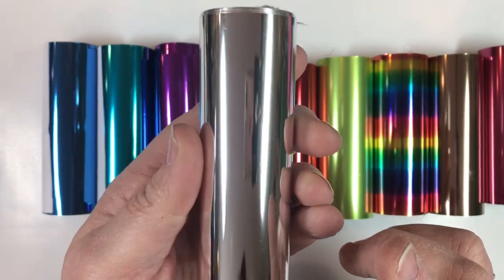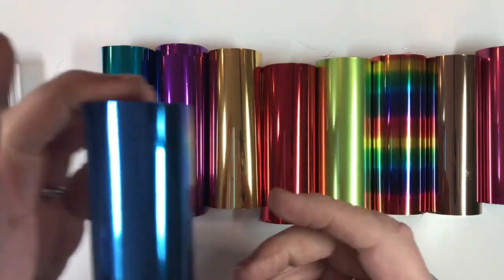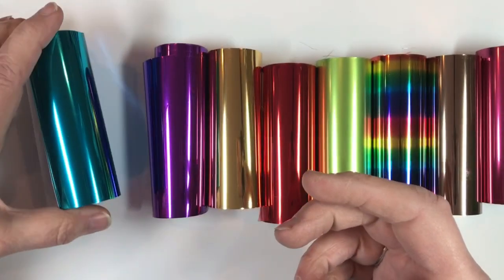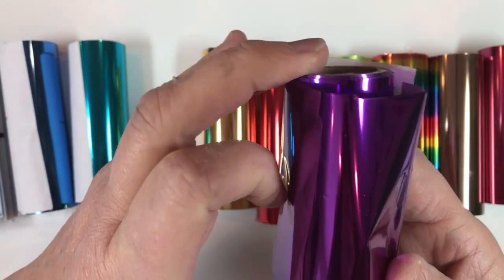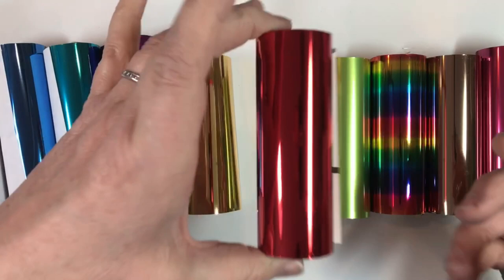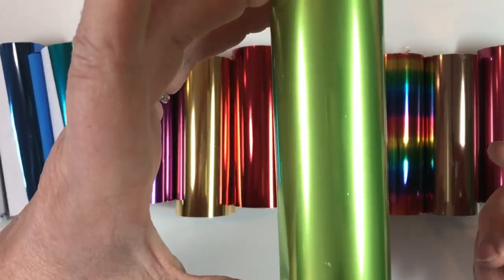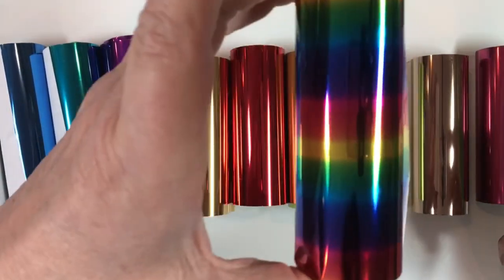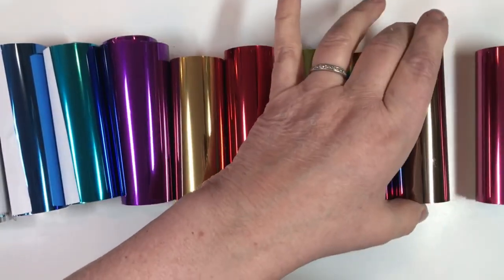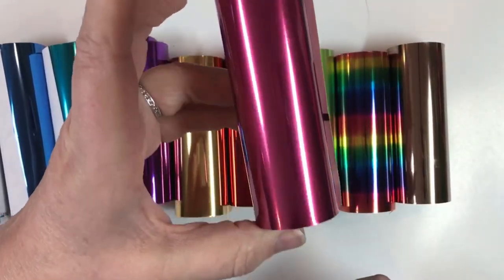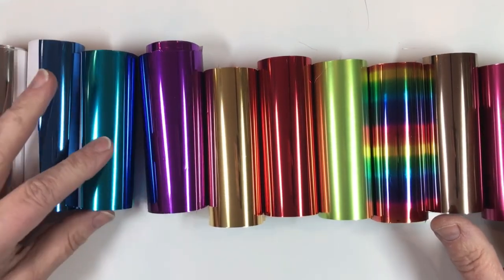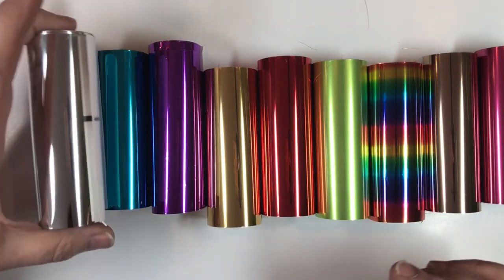So let me show you the colors. First we have this gorgeous silver, arroyo blue, teal, this lovely purple, gold, red, lime green or spring green as we're calling it, rainbow, rose gold, oh this is just so beautiful, and my beautiful raspberry pink. So those are the colors that we're offering in the initial offering, and as we go forward we'll be adding more colors.